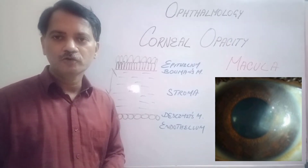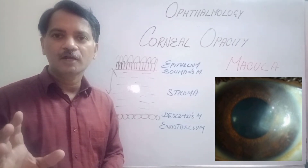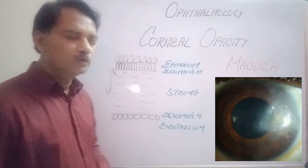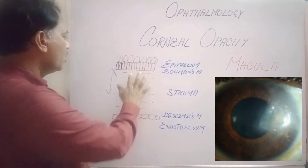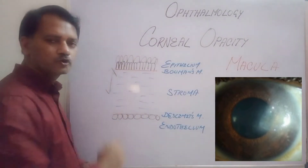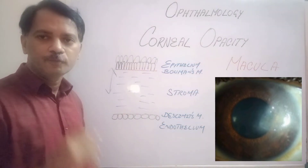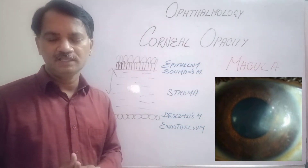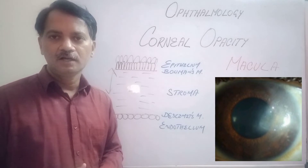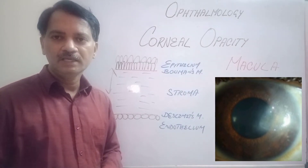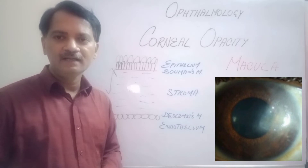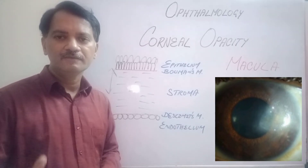The macular type of corneal opacity also requires a lamellar keratoplasty. You only need to replace Bowman's membrane and half the stroma in the affected portion of the cornea, which is sufficient to restore normal corneal layers and give the patient normal vision.